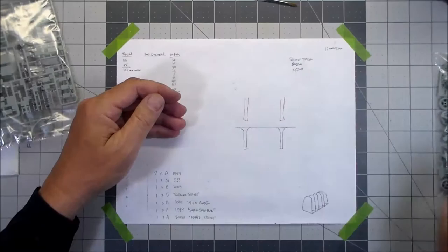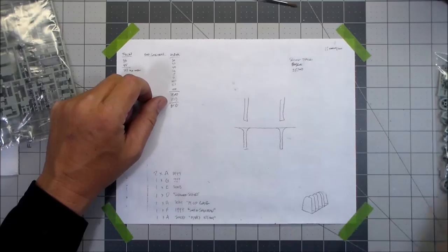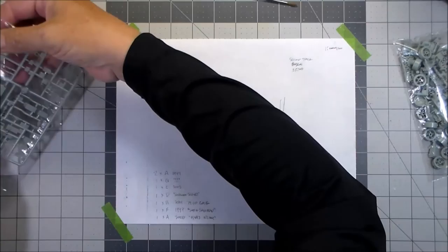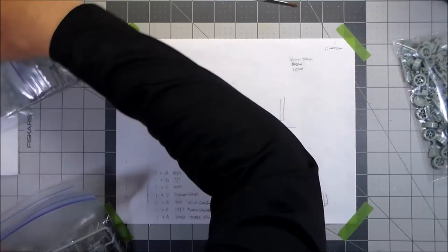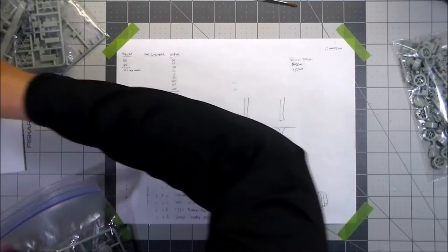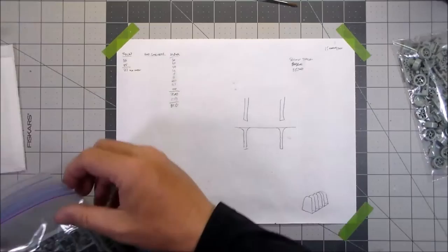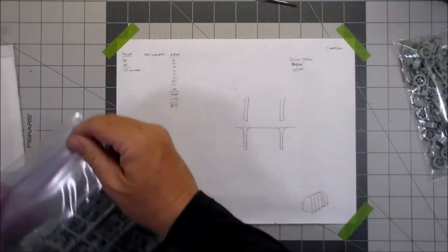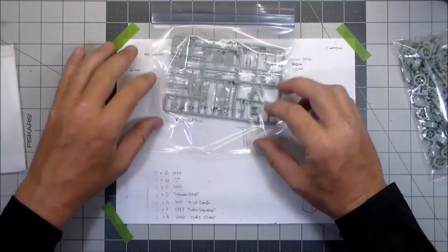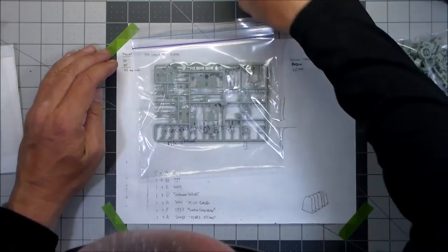So a quick rundown: the A sprues, which is what's in this bag, there was two of those and they were dated 1999, and this is how much was left off of the two sprues.